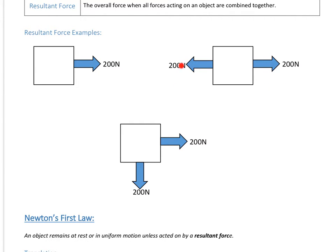In this one, we've got two forces of 200 Newtons acting in exactly opposite directions. The resultant force is going to be plus 200 — defining going to the right as positive — then minus 200, because that's going in the opposite direction. So the resultant force in this one would be zero Newtons, because they cancel each other out and there's no force left on the object.